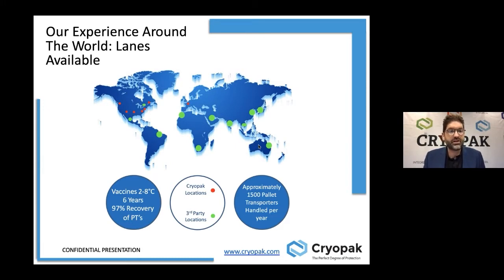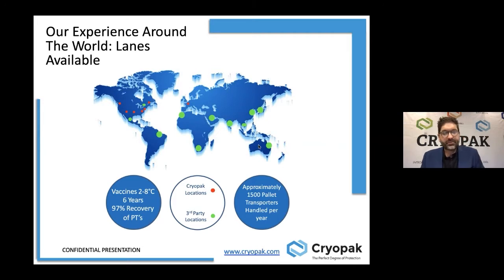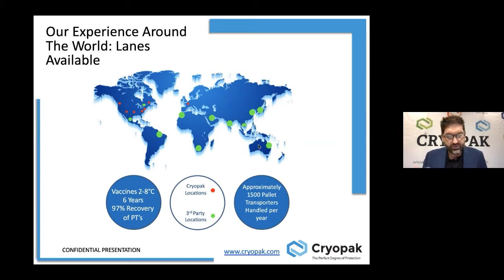All types of temperature are covered. The 2-8°C range is the one we have the most experience with over the last six years. We also have 15 and 25°C applications, minus 20°C applications, and more recently minus 70°C applications. Looking at the map, you can see all the collection points in France where we reverse and reuse packaging. The green points are partner collection locations, and the red points are CRIOPAC locations — all part of the reuse program.